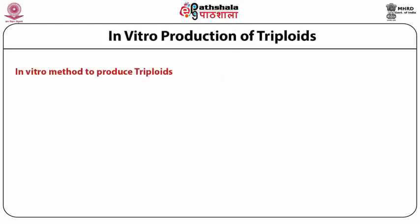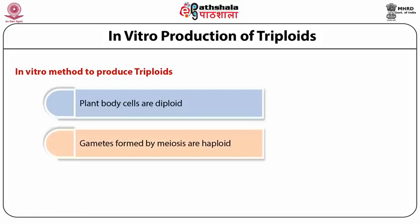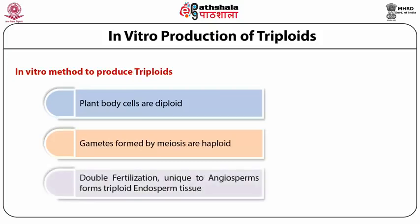The in vitro method to produce triploids is welcome. In plants, most of the plant body cells are diploid. And when they produce gametes through meiosis, the gametes are haploid. But a unique phenomenon in the angiosperms, called double fertilization, fertilizes two cells in the female gametophyte. One is the egg, which forms the diploid embryo. The second cell, which has two haploid nuclei already, fuses with one male nuclei and produces the triploid nucleus. And that develops into a triploid tissue called endosperm.